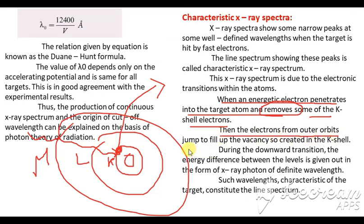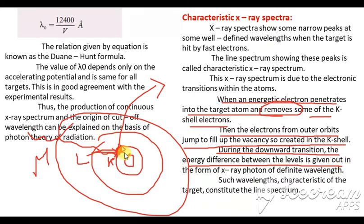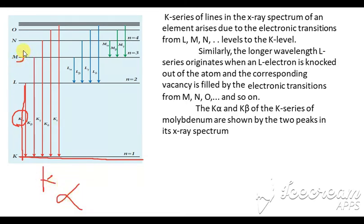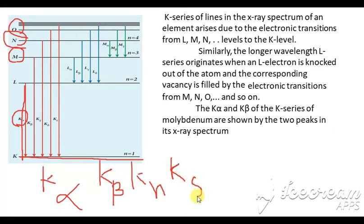Electrons from outer orbits then jump to fill up the vacancy created. During this downward transition, the energy difference is given out as characteristic X-rays. If the vacancy in the K-shell is filled from the L-shell, it is called the K-alpha line. If filled from M-shell, it is called K-beta. If filled from N-shell, it is K-gamma, and from O-shell it is K-delta, and so on.